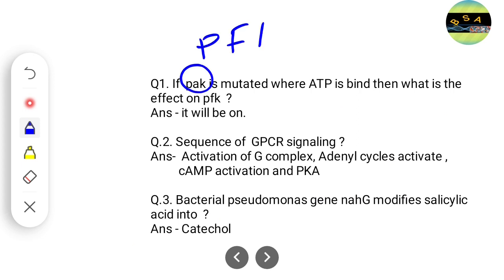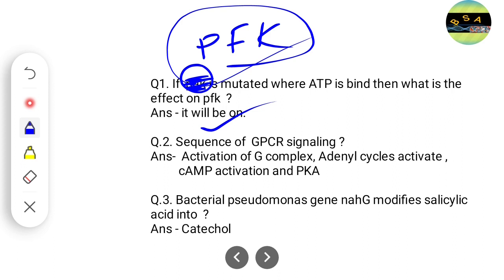Another question was about PFK — phosphofructokinase. If the site where ATP mainly binds on phosphofructokinase becomes mutated, what will be the effect? The correct answer is that PFK will always remain on, because if ATP cannot bind, it cannot control the activity of PFK.